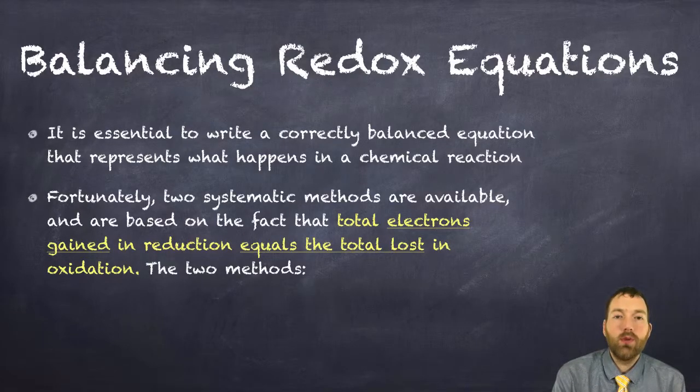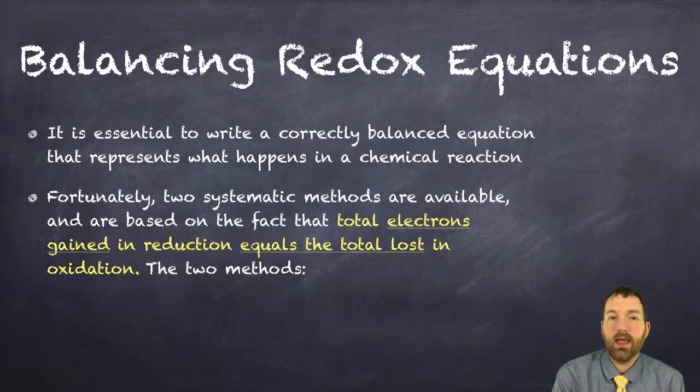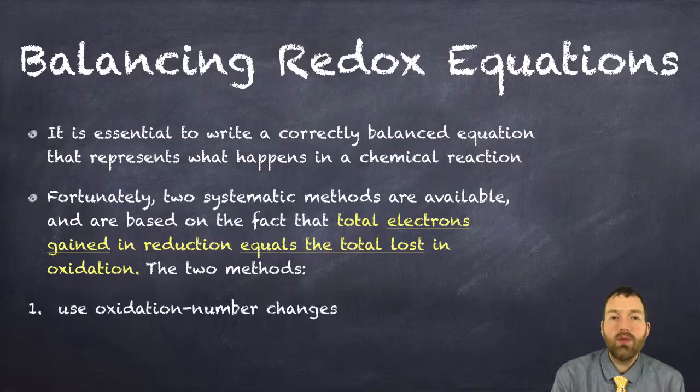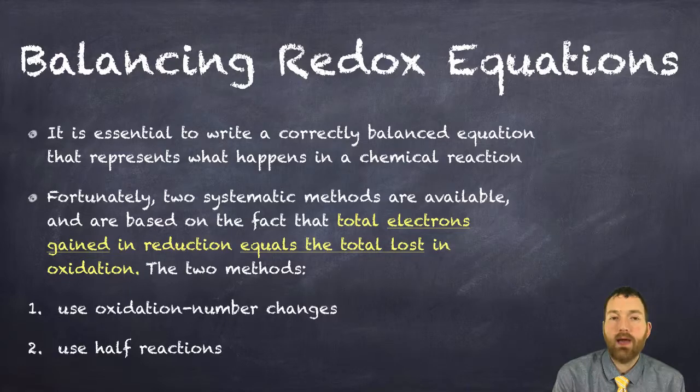Fortunately there's two ways to do this based on the fact that total electrons gained in reduction equals the total electrons lost in oxidation. The two methods involve using oxidation number changes and using half reactions.